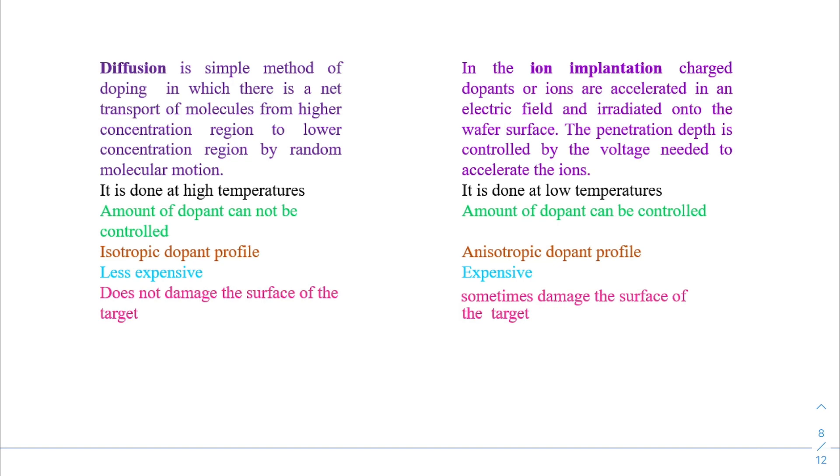As I told you earlier, there are two methods of doping. Before moving further, I will explain the difference between diffusion process and ion implantation method. In diffusion method, there is net transport of molecules from higher to low concentration region by random molecular motion. But in ion implantation method, charged dopants or ions are accelerated in an electric field and irradiated onto the wafer surface. The penetration depth is controlled by the voltage. It is done at low temperatures while diffusion is done at high temperatures. In ion implantation, the amount of dopant can be controlled, resulting in anisotropic dopant profile. But in diffusion process, as dopant cannot be controlled, it results in isotropic dopant profile.